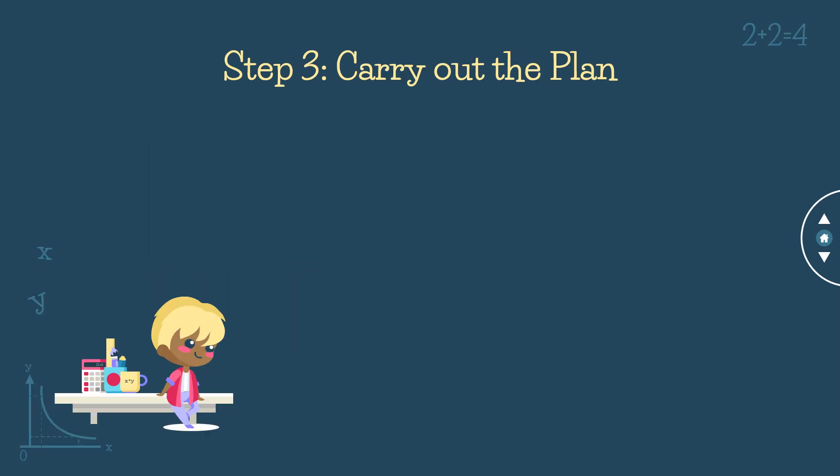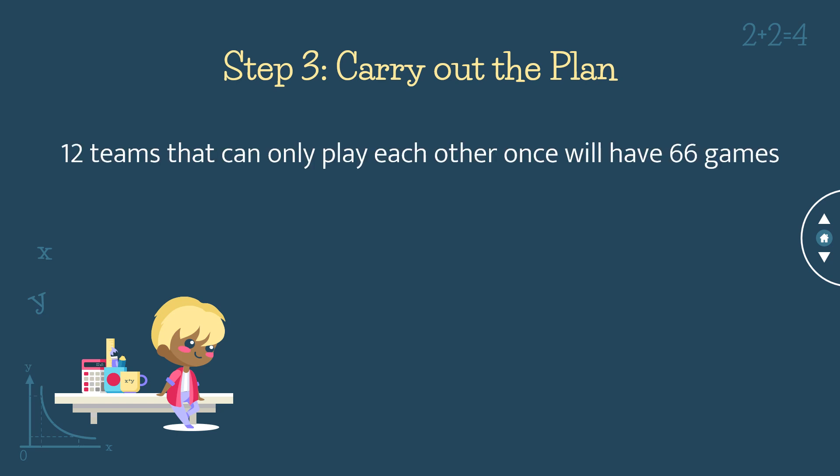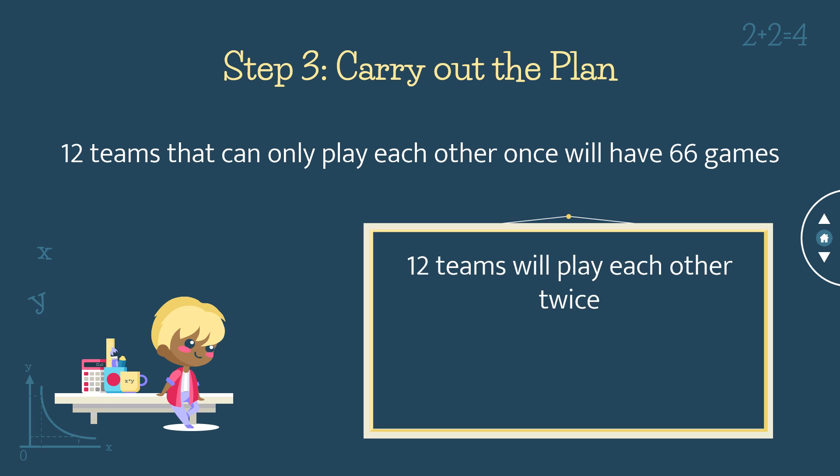The next step is to carry out the plan. Based on the process we developed previously, 12 teams that can only play each other once will have 66 games. We can now answer our given problem: since 12 teams will play each other twice, our equation will be 66 times 2, which equals 132 games.